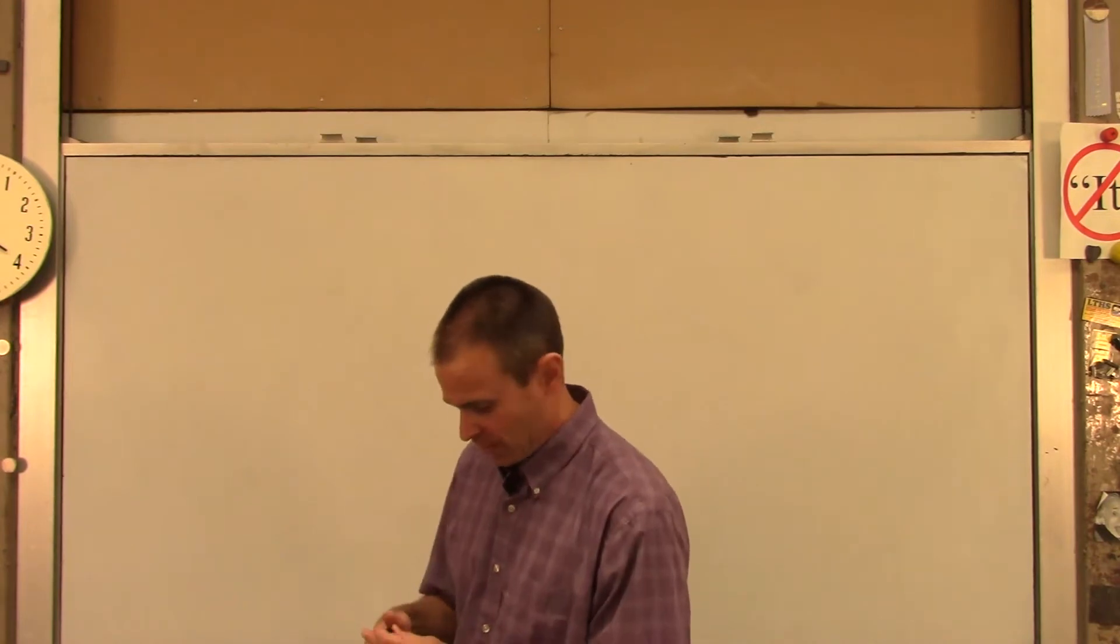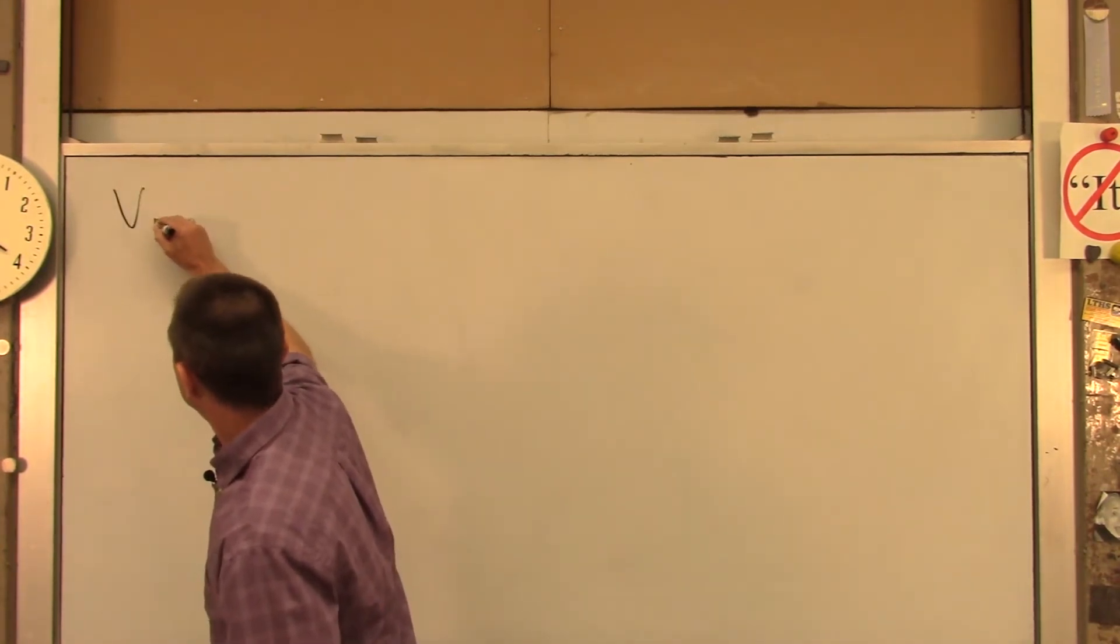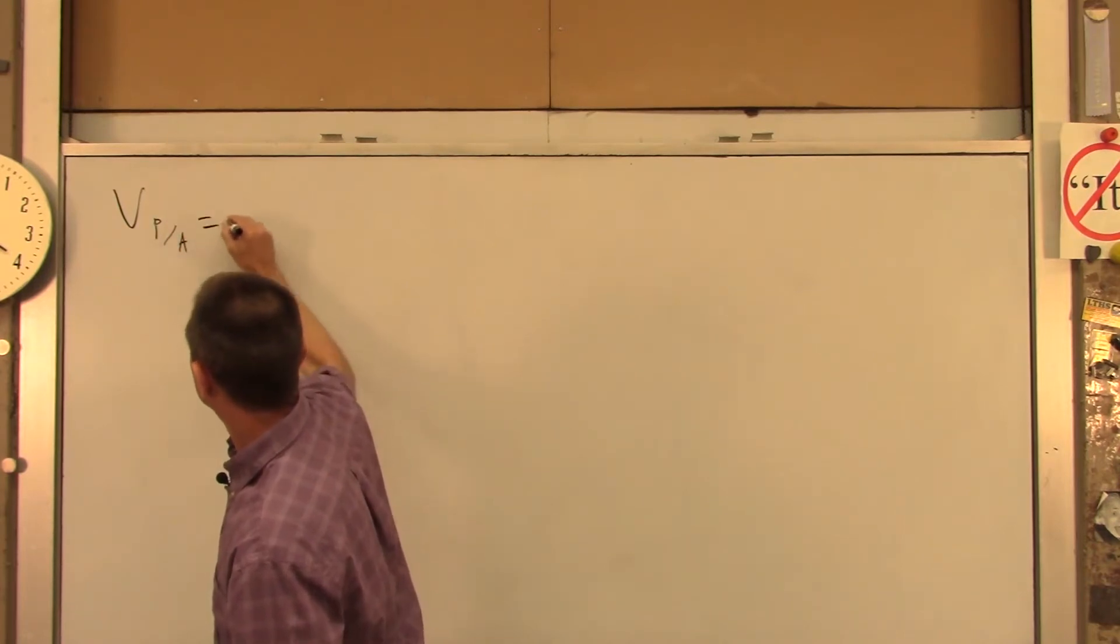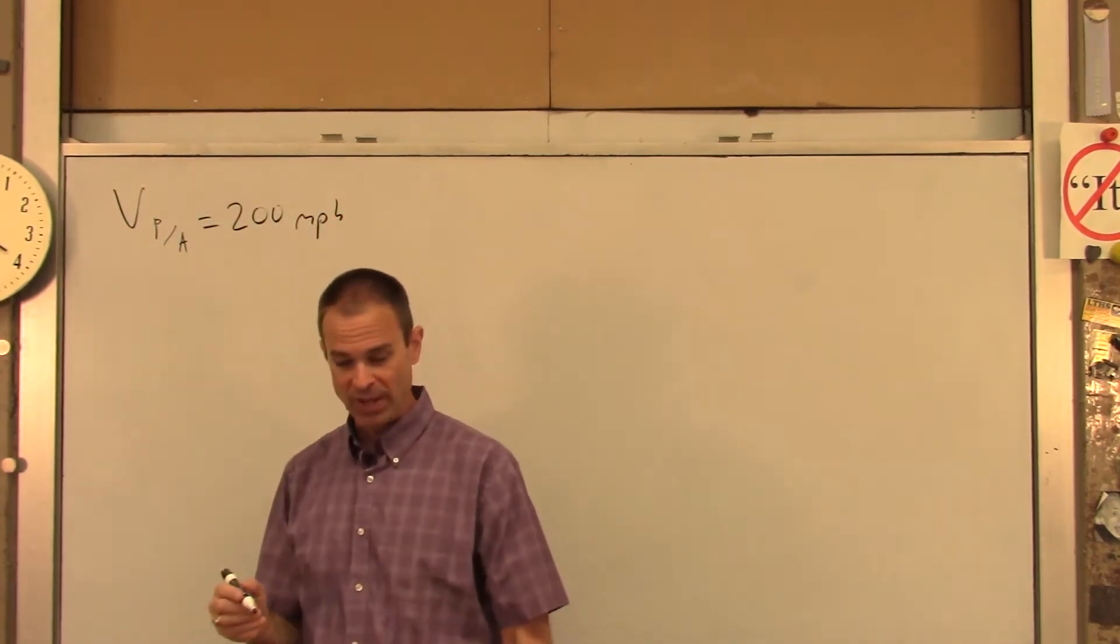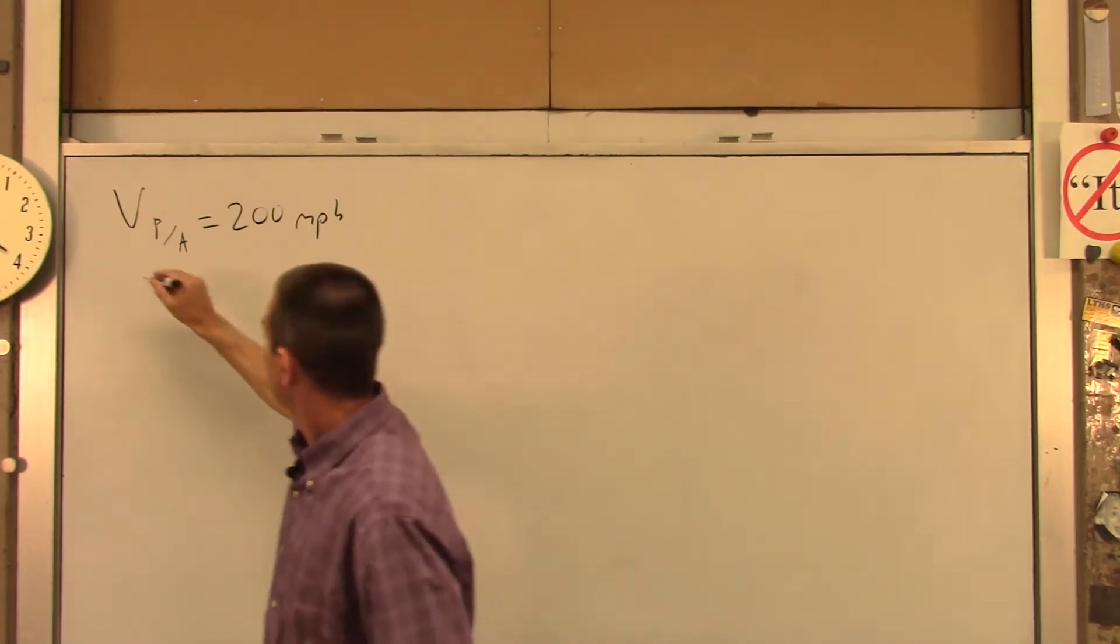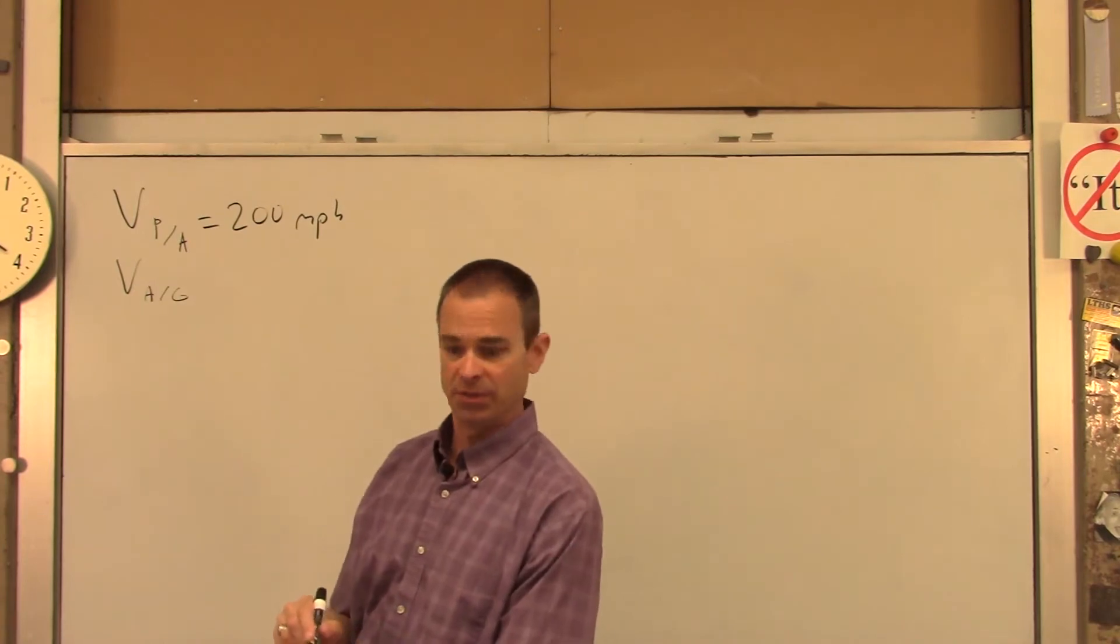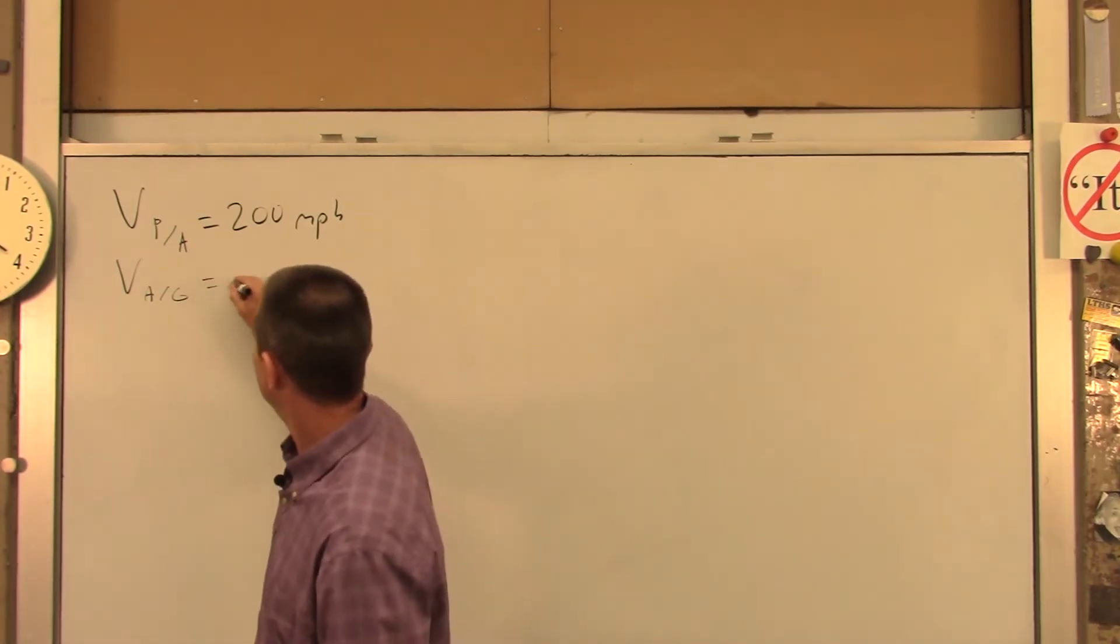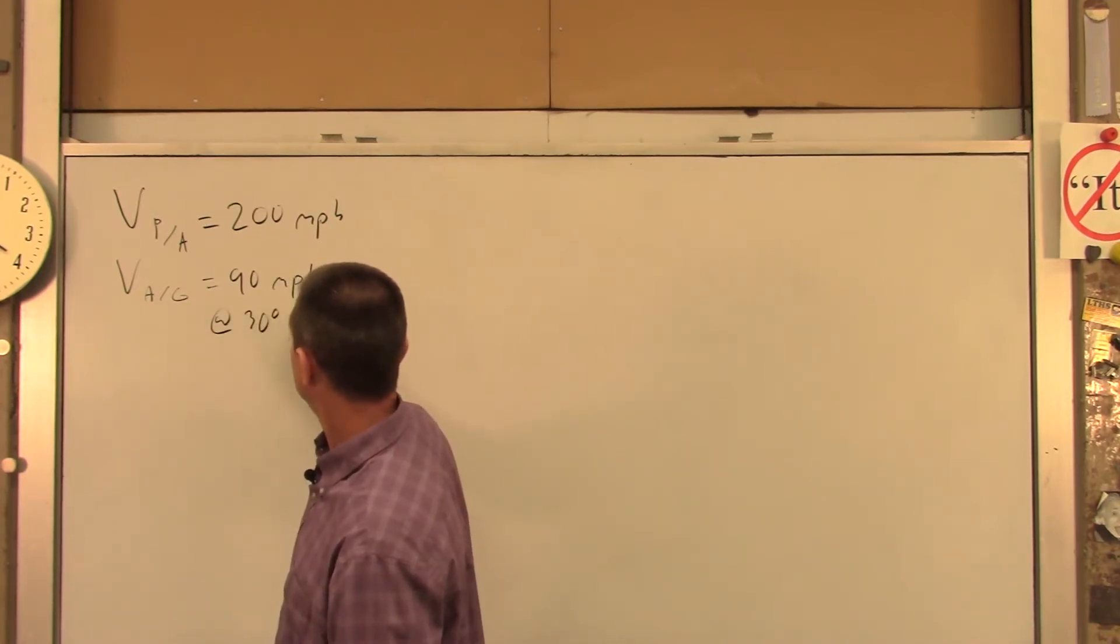So some data for us. The velocity of the plane with respect to the air is 200 miles per hour. Now we don't know which way he's going to have to point yet. The velocity of the air with respect to the ground, otherwise known as the wind, is going to be 90 miles per hour at 30 degrees north of east.